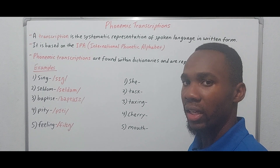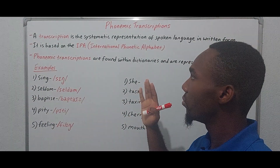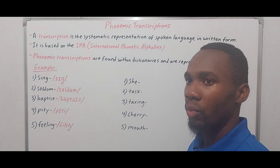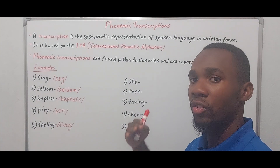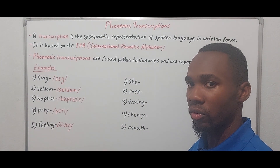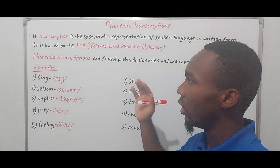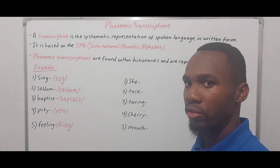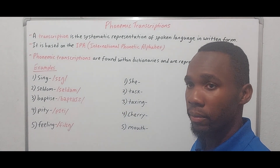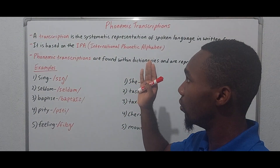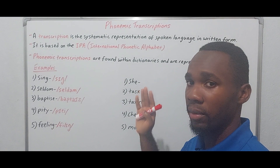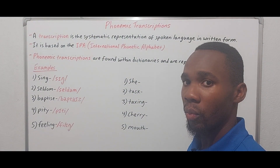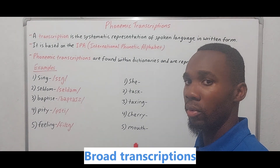This is based on the IPA — the International Phonetic Alphabet. If you're not familiar with the IPA, it's an alphabet of symbols, and these symbols are used to represent sounds. This is what linguists use to transcribe sounds and represent them in written form. I chose to address phonemic transcriptions today because they are what we call broad transcriptions.